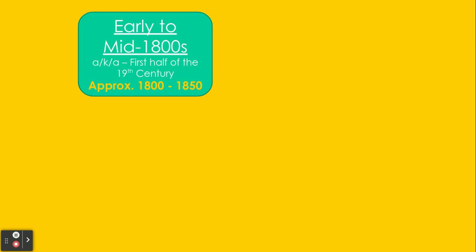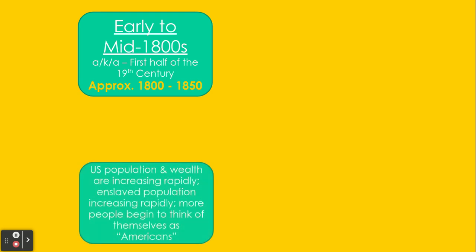Everything in this unit is going to be going on during this time period for the most part. During this time, the U.S. population and wealth were increasing very rapidly. The population was skyrocketing. We are becoming a wealthy country. However, the enslaved population is also increasing rapidly during the early to mid-1800s, as we will talk about soon. Also, many people are finally starting to think of themselves most as Americans — they are losing that loyalty to their old states.